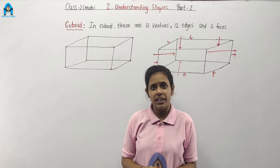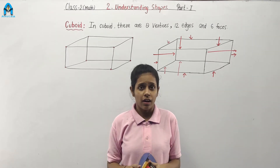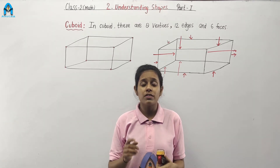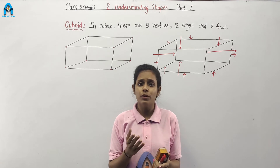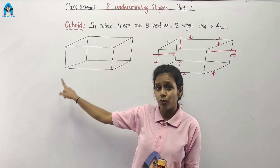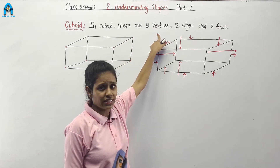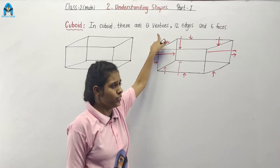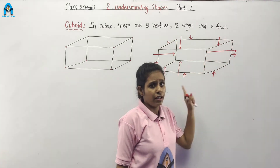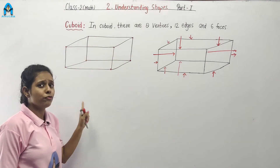We have learned about plane shapes: rectangle, square, triangle and circle. Now, we will learn about solid shapes. Solid shapes are also called 3D shapes. Our first solid shape is cuboid. In a cuboid, there are eight vertex, 12 edges and 6 faces. Look at the figures — this is a shape of cuboid.